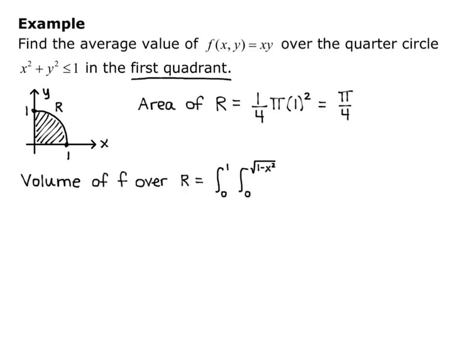Now I want to find the volume of f over R. I know R can be expressed as the integral from 0 to 1 times the integral from 0 to square root of 1 minus x squared. That establishes my quarter circle of xy, the given function, dy dx. So that's going to be my volume of f over the region R.